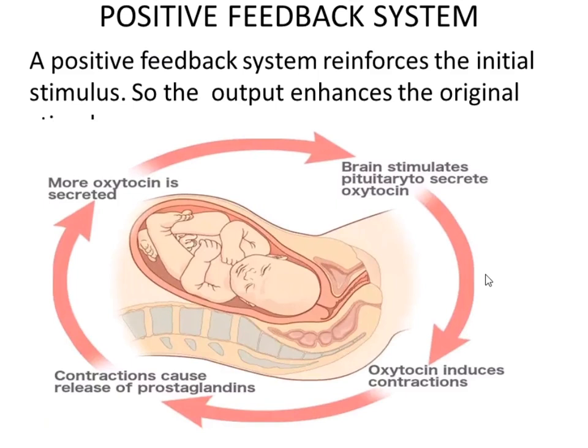An example of positive feedback is during delivery or pregnancy. The brain stimulates the pituitary gland to secrete oxytocin, which causes contractions in the uterine wall. The contractions cause the release of prostaglandins — hormones that cause dilation or contraction of smooth muscles. These prostaglandins cause more oxytocin to be secreted, which stimulates the brain to cause the pituitary gland to secrete even more. The response thus causes the stimulus to produce more response, increasing the output.